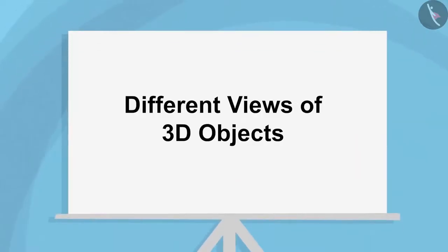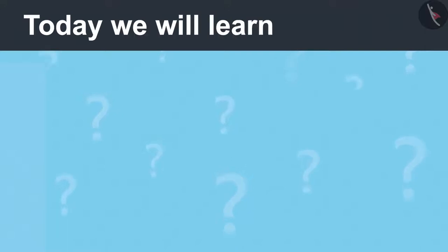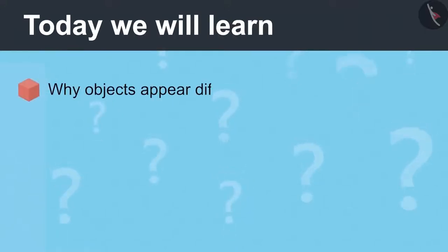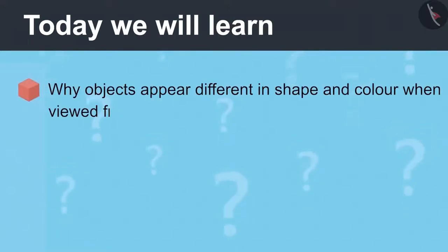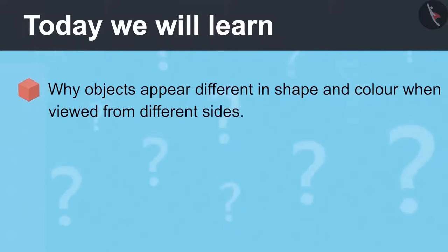Different views of 3D objects, part 1. Today we will learn why objects appear different in shape and color when viewed from different sides.